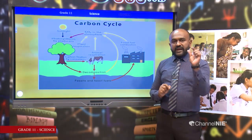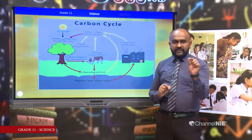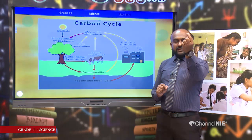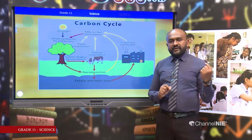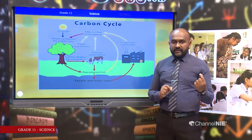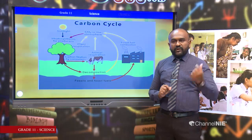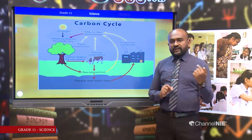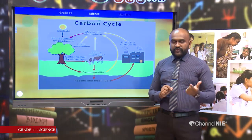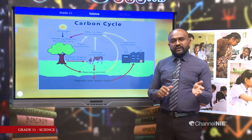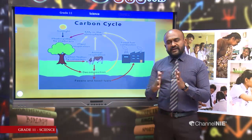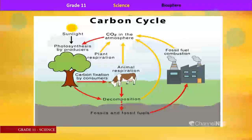There is one method which takes carbon dioxide from the atmosphere to the body of organisms — that is photosynthesis. In environmental chemistry, we call it a sink, so photosynthesis is a sink of carbon dioxide. This is how we explain the carbon cycle.